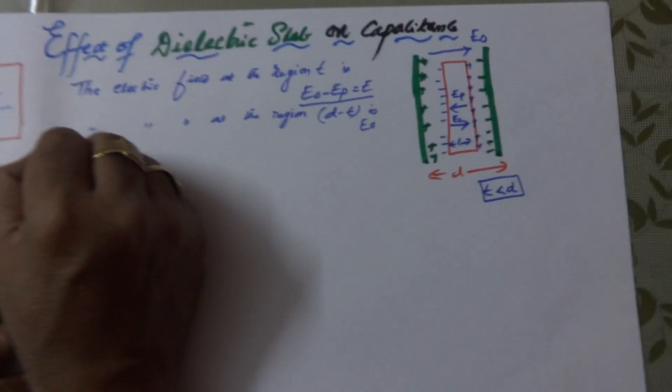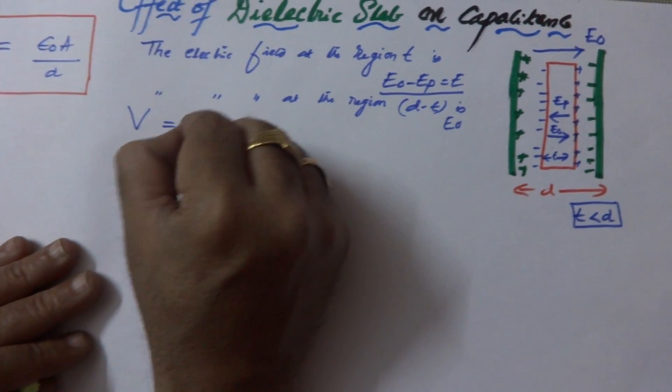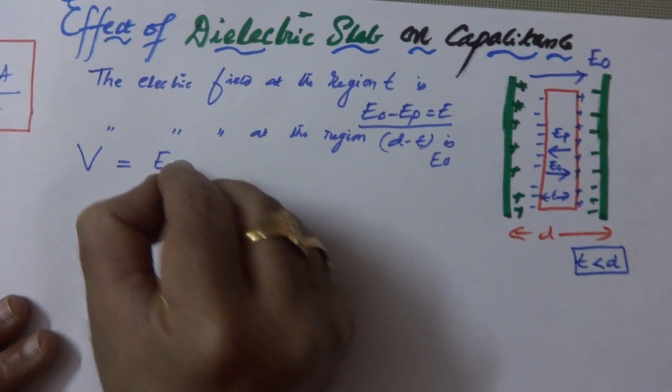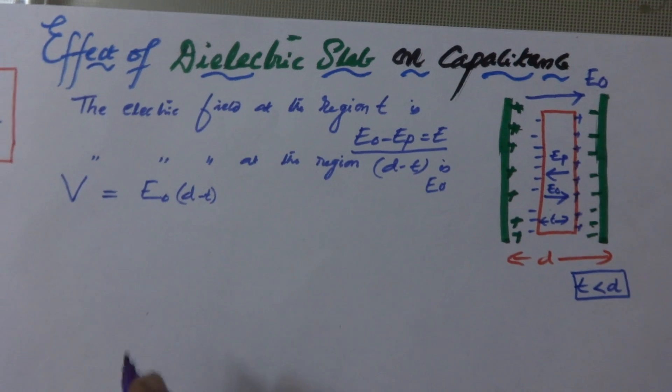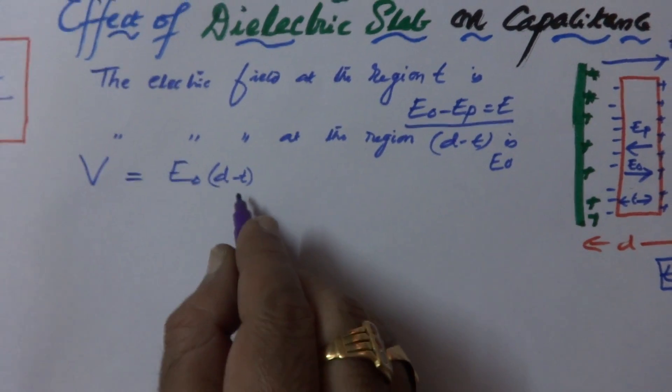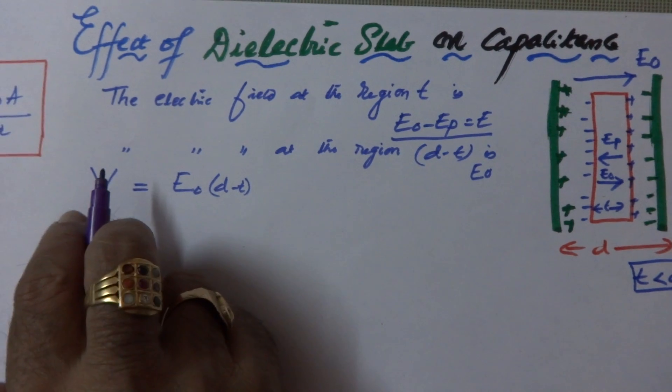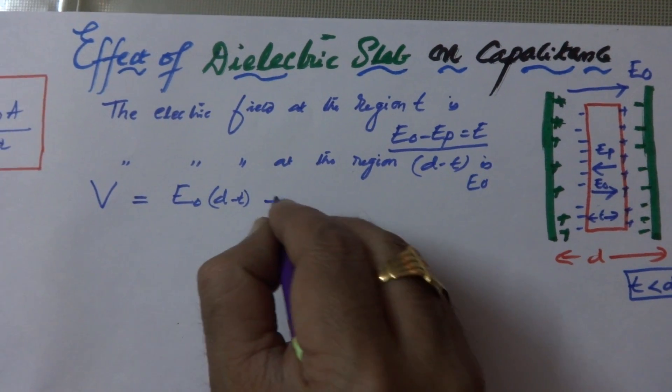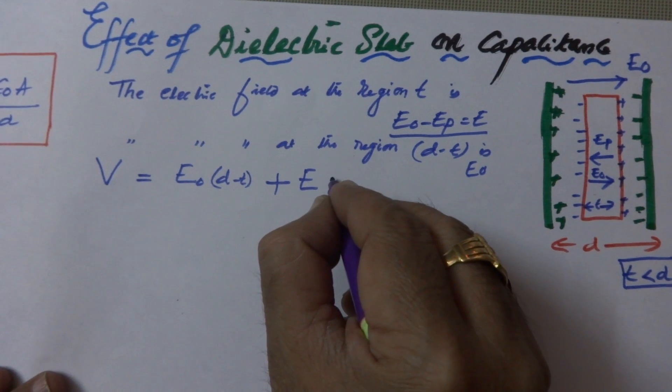If you want to calculate the potential difference, then potential difference will be equal to E0 times d minus t. Remember, the electric field times distance between the two is only known as electric potential. Now, this E times t.